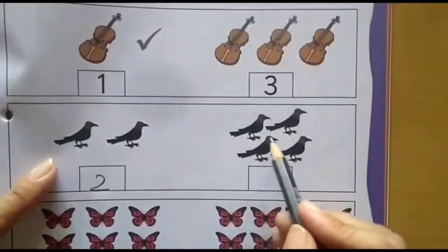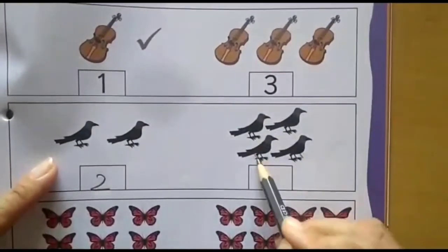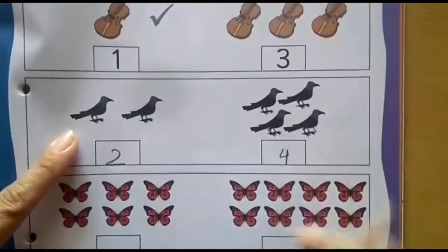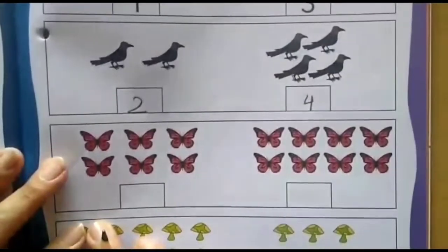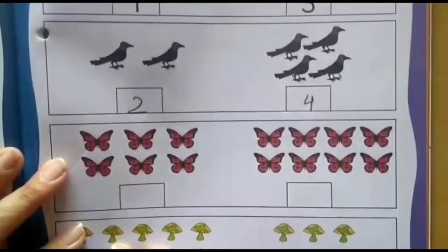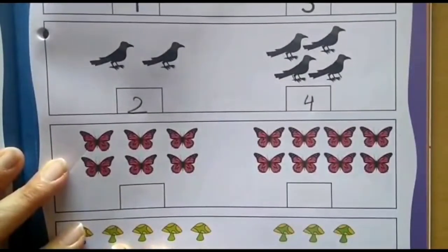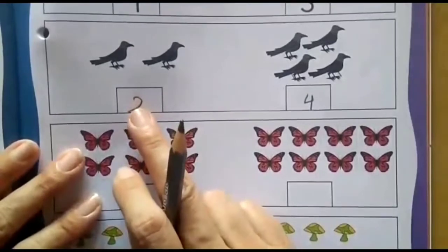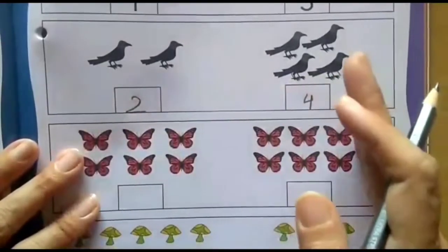Here how many crows? 1, 2, 3 and 4. So here which number will come here? Number 4. Now what we need to do? We need to tick the set that shows a smaller number. Now tell me which number comes in the beginning, 4 or 2? Which number comes first?